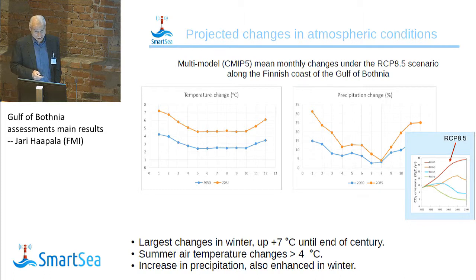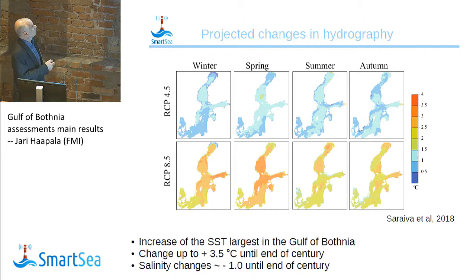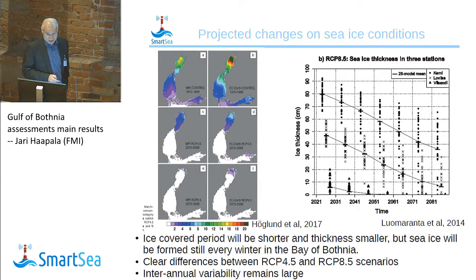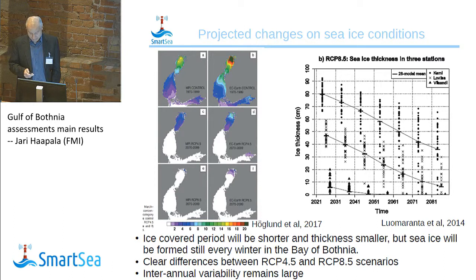Looking at ocean temperatures and salinities, new results from the Swedish group show that the largest SST changes in the Baltic Sea are also in the Bay of Bothnia. Projected changes in ice conditions show that the ice-covered period will be shorter and the ice will be thinner, but there will still be ice in the Bay of Bothnia — even under the highest emissions scenario, we will have some ice at the end of the century in the Bay of Bothnia.